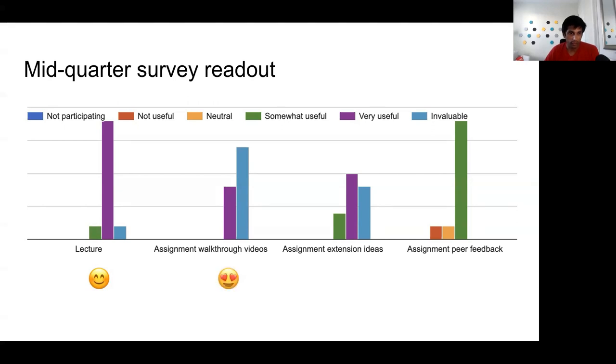Looking at each component: lecture is going pretty well, and walkthrough videos and extension ideas are really valuable. But people are not finding much value from peer feedback. In my mind, peer feedback is tightly linked to code review. What I'm hearing is that people aren't able to meaningfully review each other's code. I think there are valid reasons for that — it's more a problem with how I set up the class, and that's okay.